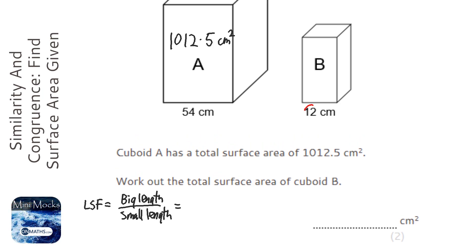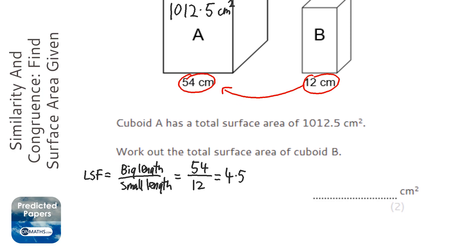In this question, we have this bottom length here and this bottom one here. We're trying to work out what we multiply 12 by to get 54. So it's 54, the big length, over 12. Getting my calculator: 54 divided by 12 is 4.5. So the linear scale factor is 4.5.